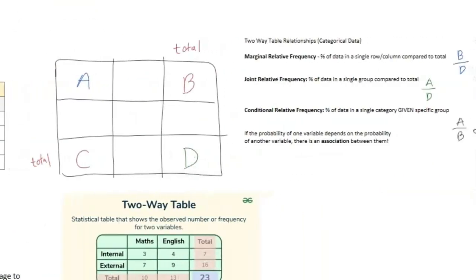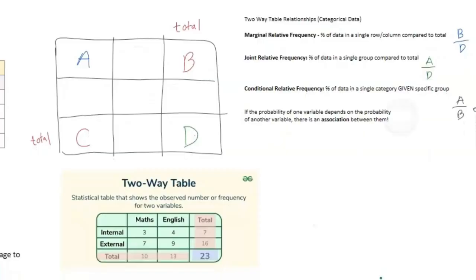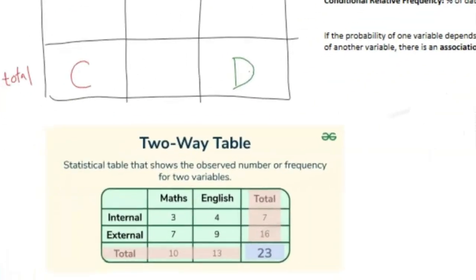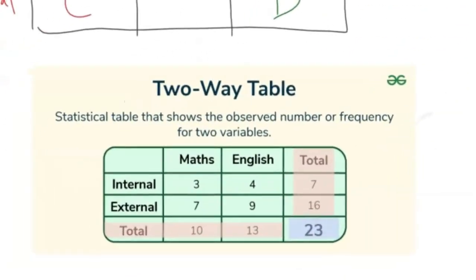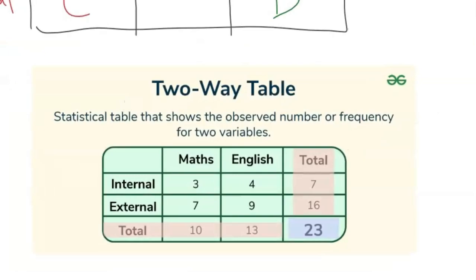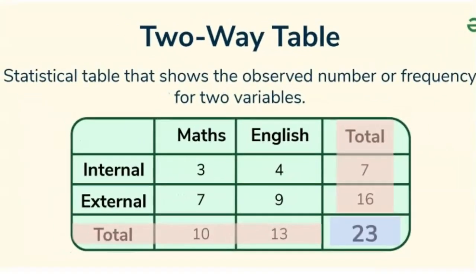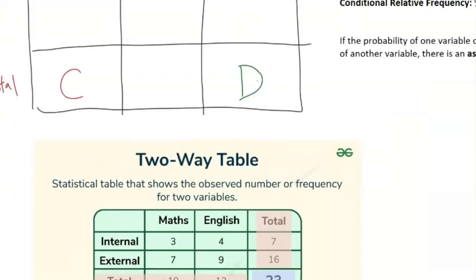We're going to branch off here and talk about categorical data, which you want to represent with a two-way table. You've probably seen these before, but basically you have two variables on either side, and it shows the intersections between certain variables. As you see here, we have math students - we have 10 math students, but we also have the internal and external variables that split up the number of math students. We have three math students who are internal, seven students who are external, and the same case for English.